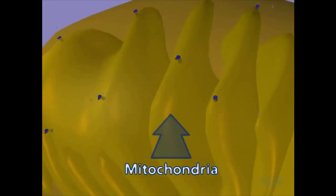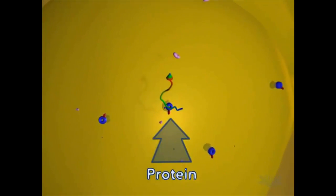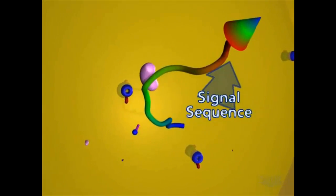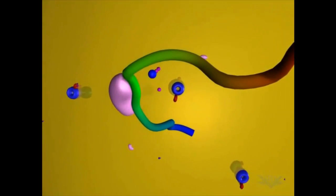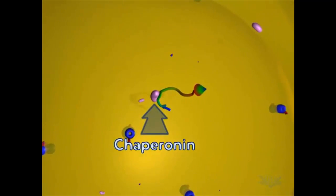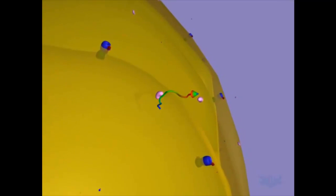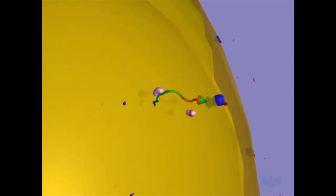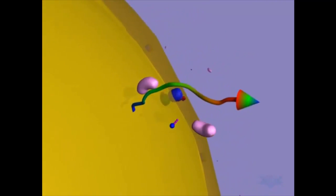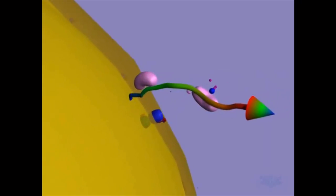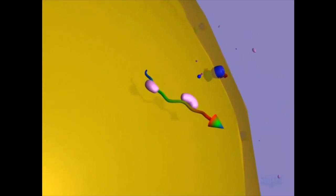Proteins destined for import into an organelle, such as a mitochondria or chloroplast, contain a signal sequence. This sequence acts as a targeting mechanism to ensure the protein is delivered to the proper organelle. In addition, chaperonin proteins aid in the import process. They become associated with a protein while it is still in the cytoplasm. This association requires energy from ATP. Chaperonins aid in unfolding the protein so it can travel through the organelle membrane.